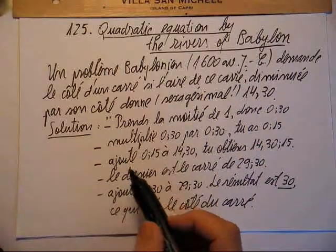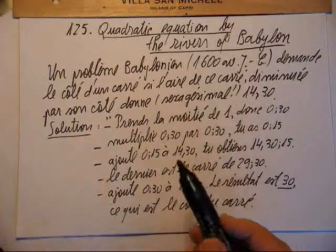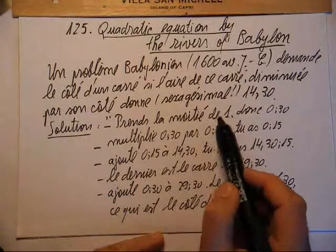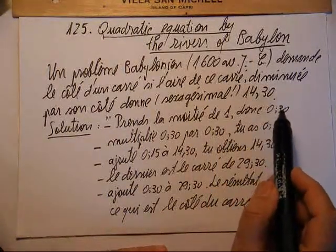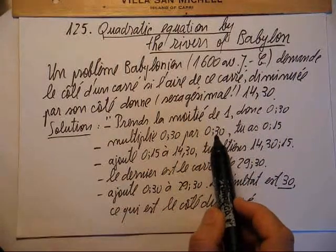Voilà la solution écrite sur une tablette d'il y a environ 3600 ans, traduit bien sûr en français. Prends la moitié de 1, donc 0,30.